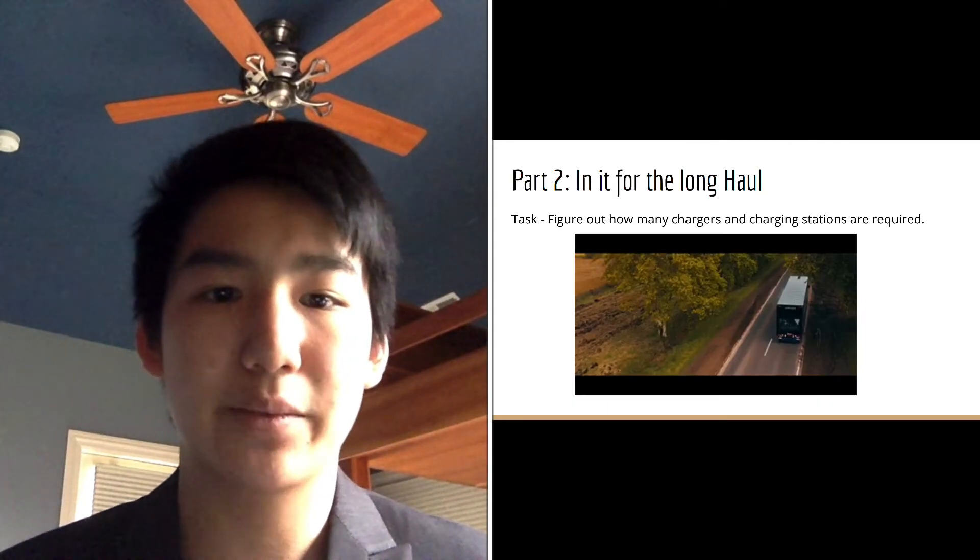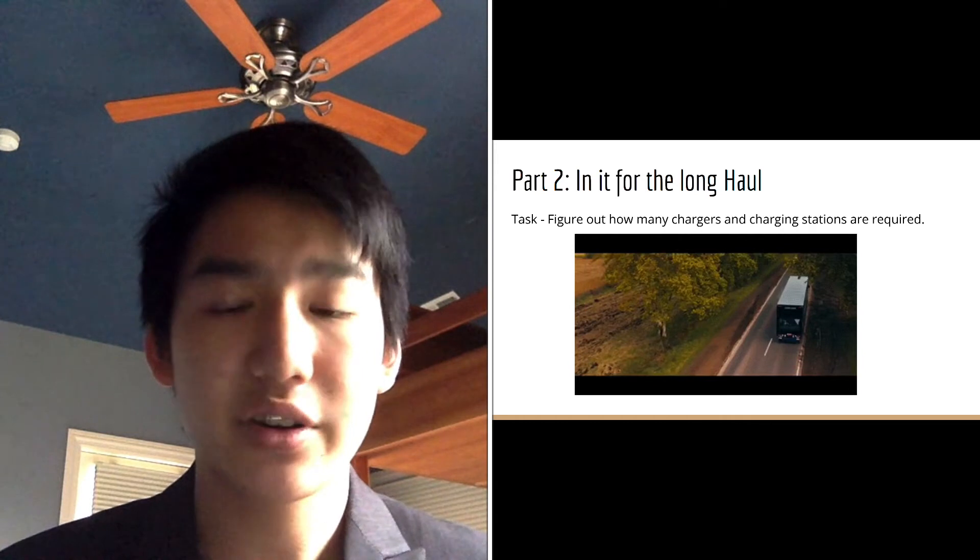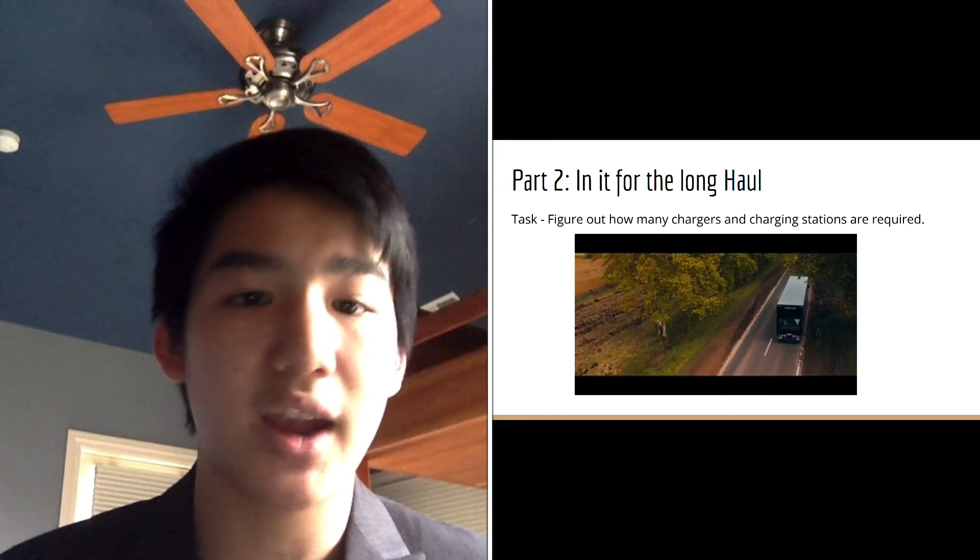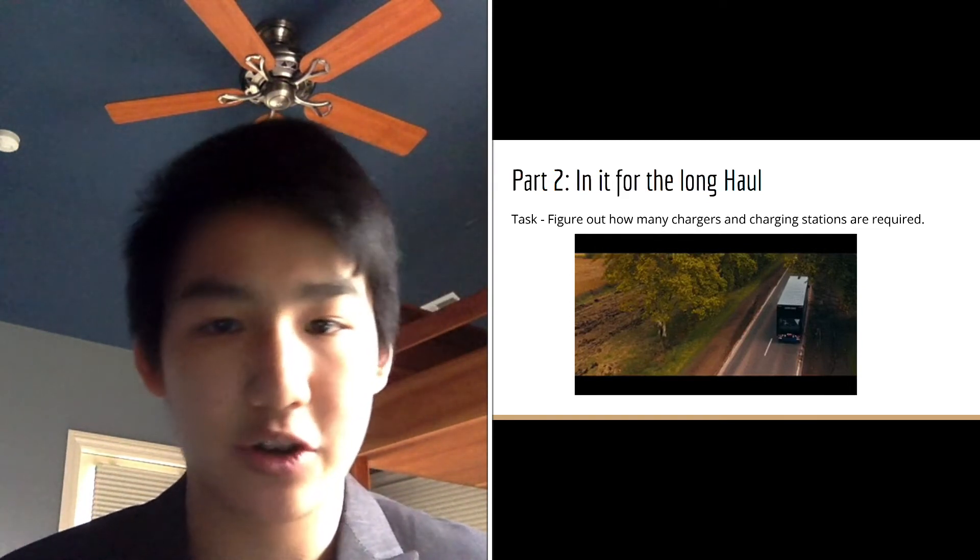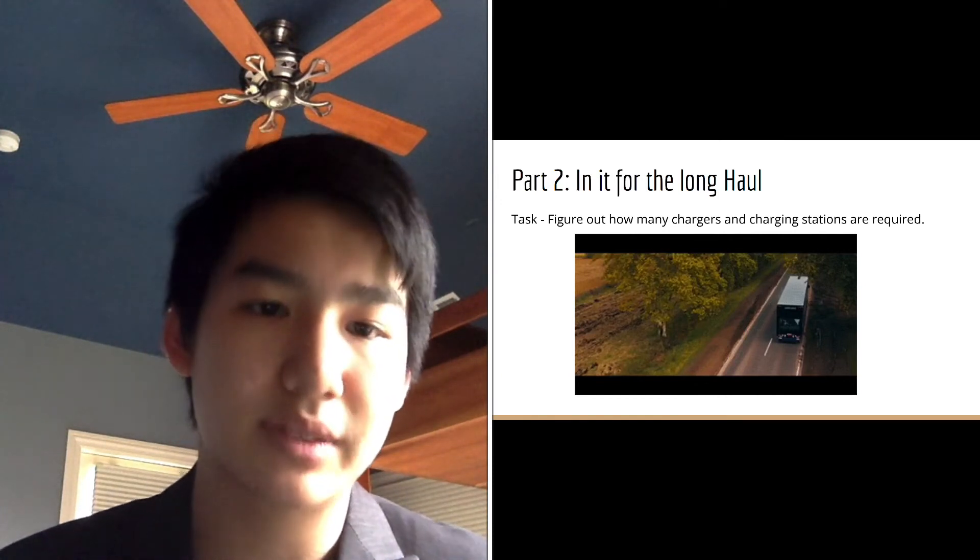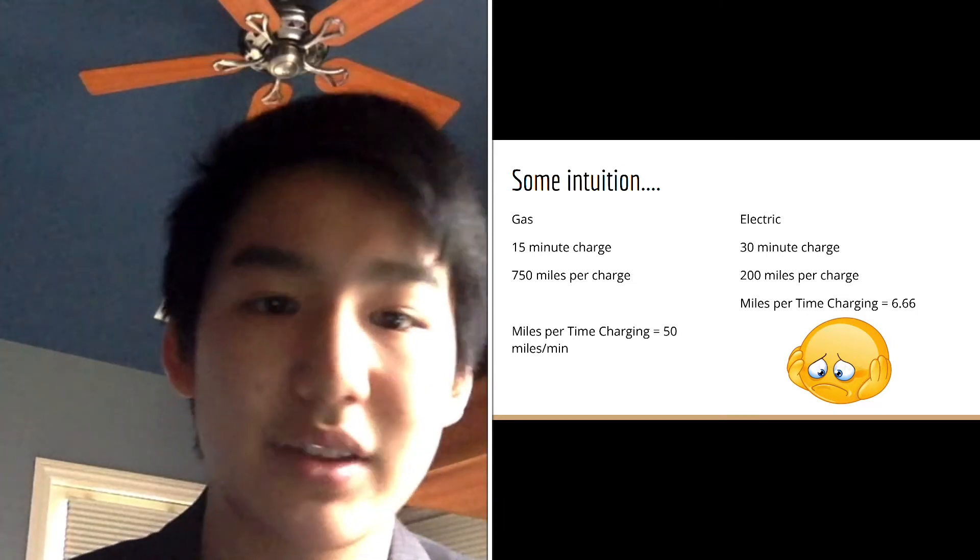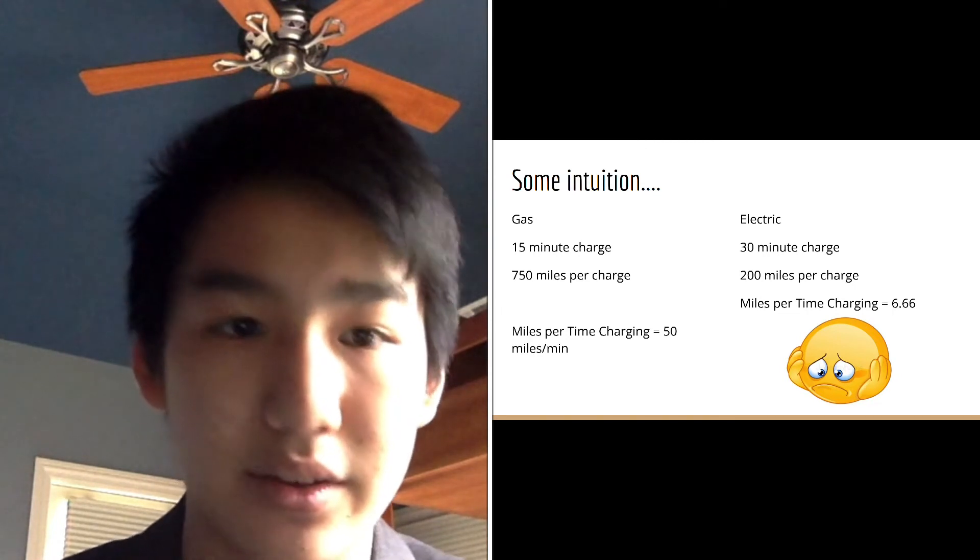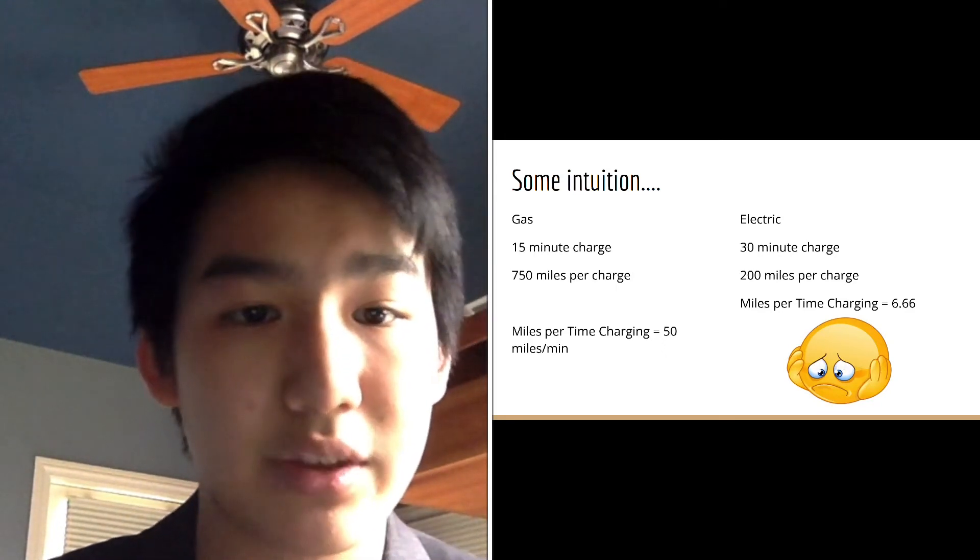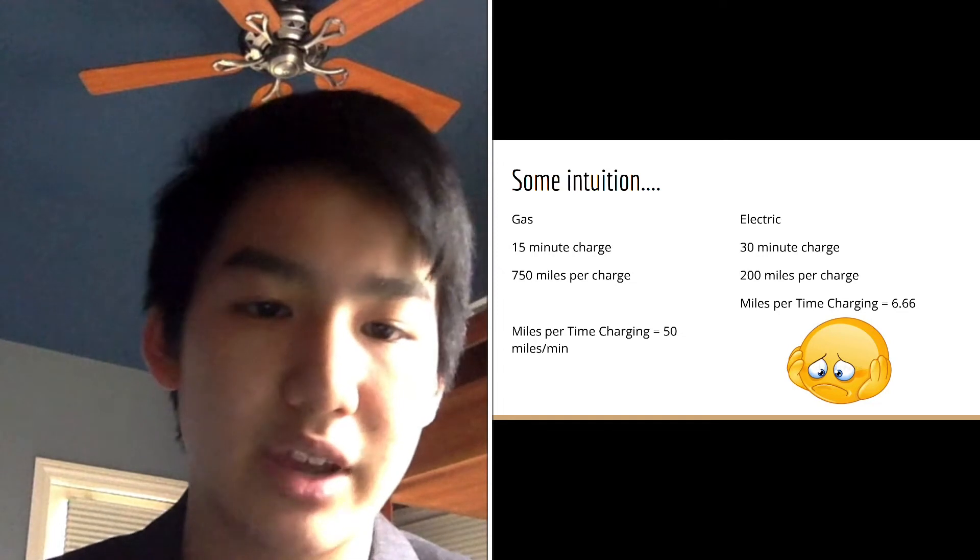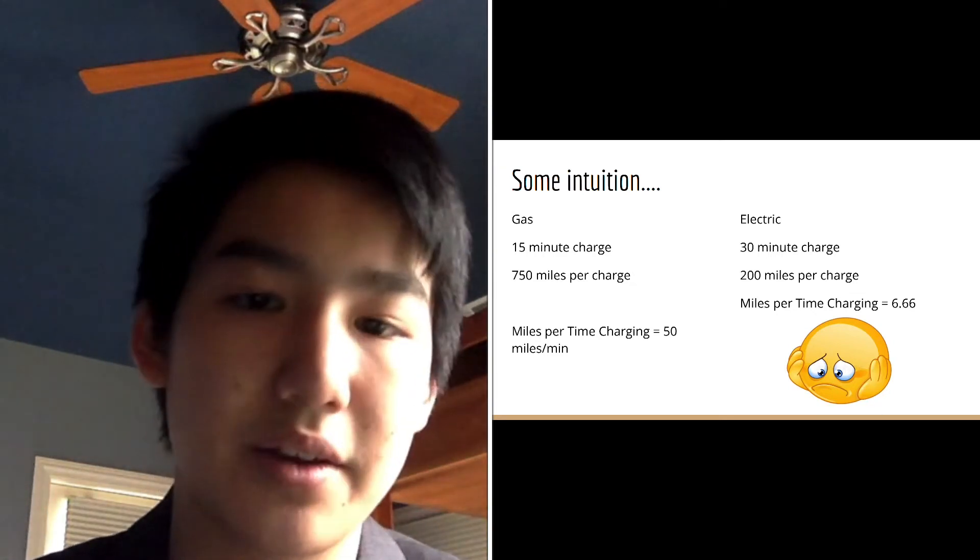In part two, we were tasked with creating a model that would predict the necessary charging stations and charges required along each corridor. In order to accomplish this, we utilized a program that took inputs of the average daily truck density per day and the existing locations of exit ramps, as well as existing information regarding the charging times, miles traveled per fuel, and trucking habits. Because electric chargers are significantly slower than gas charging, with good gas trucks taking 15 minutes to reach a full tank that can last 750 miles, and electric trucks take 30 minutes of charging time to travel a meager 200 miles, that means that gas trucks are roughly 9 times more efficient in terms of how many miles you get per minute of charge. Thus, we can expect that the number of charges that we require are significantly higher than the number of gas pumps in order to accommodate for existing traffic flow.